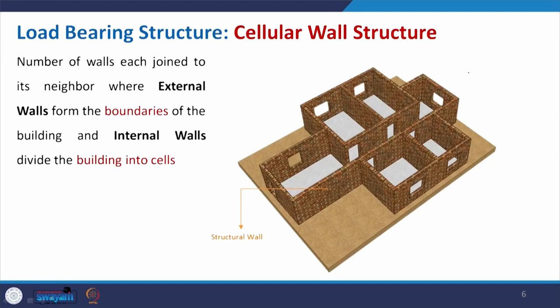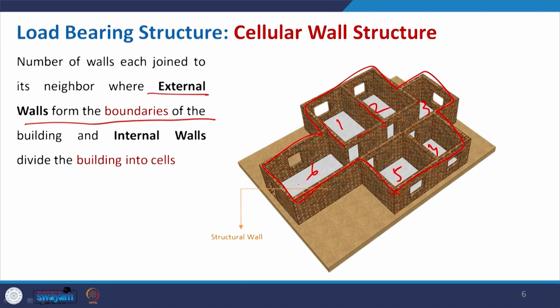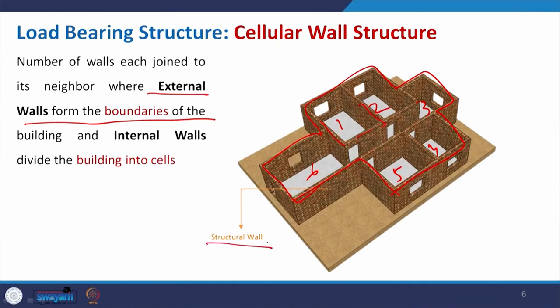The cellular wall type arrangement has a number of walls joined together where external and internal walls are combined in such a manner that the external walls create a boundary profile and the internal walls create divisions — making cells. So practically it is making rooms; the outer wall gives the boundary, the internal walls make the division and the cells, numbered 1, 2, 3, 4, 5, and 6. In all cases, these are structural load bearing walls, and this arrangement is called cellular.